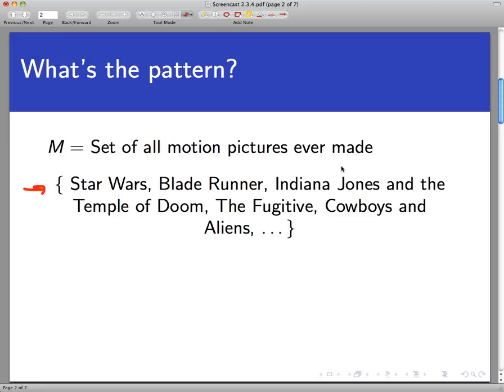Star Wars, Blade Runner, Indiana Jones, The Fugitive, Cowboys and Aliens, dot dot dot. Now normally we put the dot dot dot there to indicate a pattern is taking shape and we want to continue that pattern. It may not be totally obvious to you what that pattern is in this case. So think about this for a second and test your pop culture knowledge. What is the pattern that's connecting all of these movies together? What do all the elements of this set have in common?